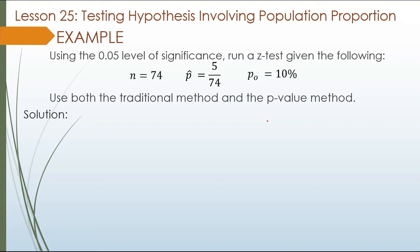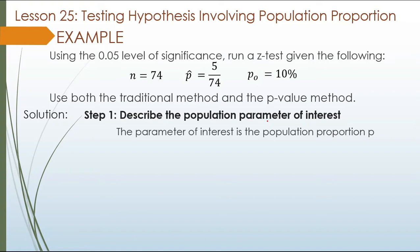Step 1: Let us describe the population parameter of interest. The parameter of interest is the population proportion p. That is the population of interest this time — the population proportion p.